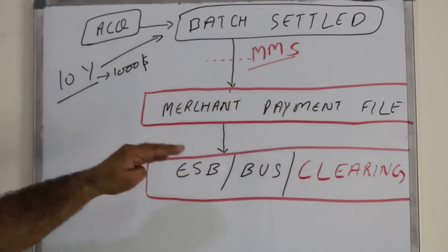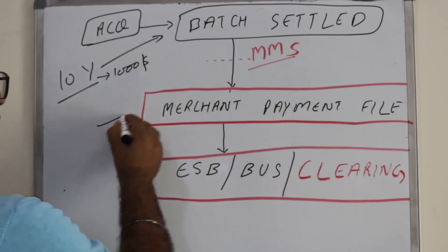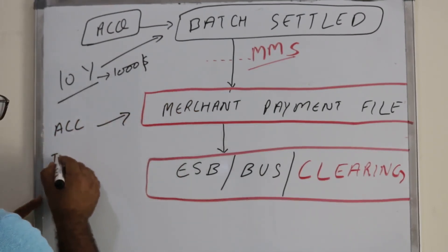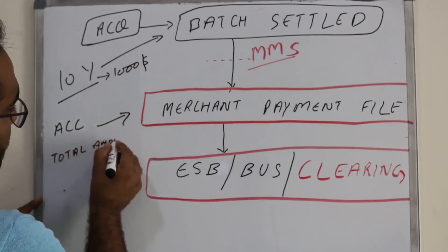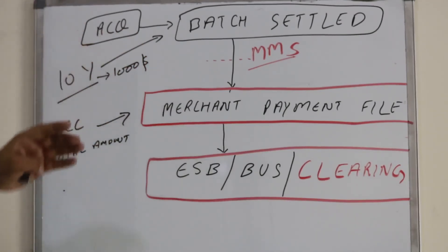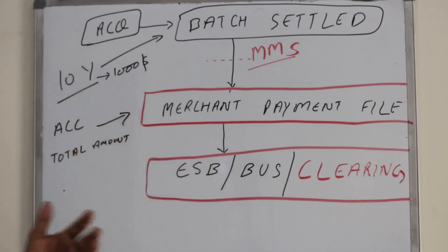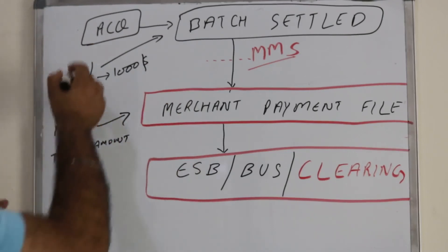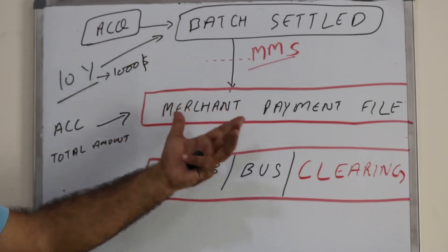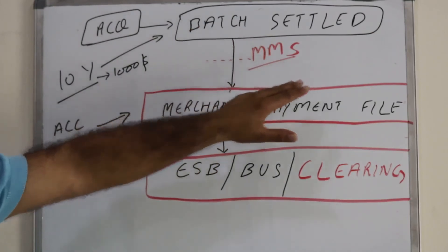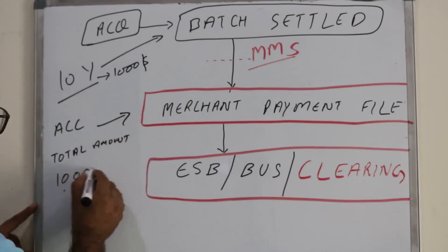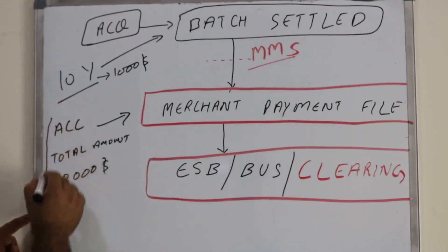This merchant payment file contains the merchant account number, whether current or saving account, and the total amount to be paid. Throughout the day, this merchant may have done $10,000 in business across 3 or 4 POS devices, submitting multiple batches. At end of day, the acquiring bank posts all those batches to the merchant management system and generates the merchant payment file with a total amount of $10,000.